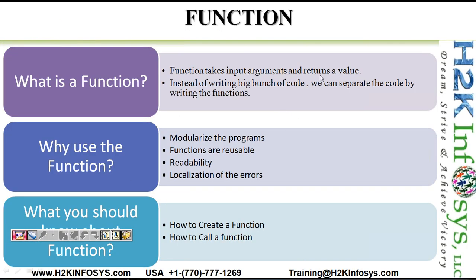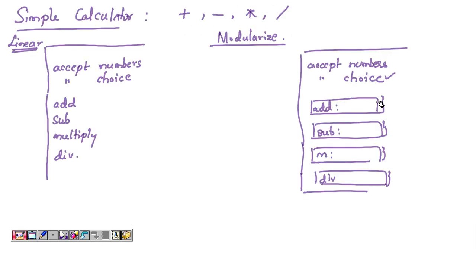A function takes input arguments and returns a result. Instead of writing a large block of code as a linear script, we can separate the code by writing functions. The first advantage is that it modularizes the program — the program is written in a more organized way, with separate functions for different kinds of operations. These functions are also reusable — you can create a function once and it can be called any number of times.